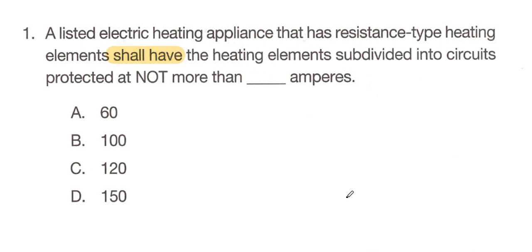"Shall have" — shall and shall not — are what is called a mandatory rule. If we look at NEC article 90.5, section A, it says that rules of the National Electrical Code that are specifically requiring or specifically prohibiting are characterized by the phrases "shall" and "shall not." So as this question says "shall have," this is likely going to be very specifically listed within the NEC article where we find the answer.